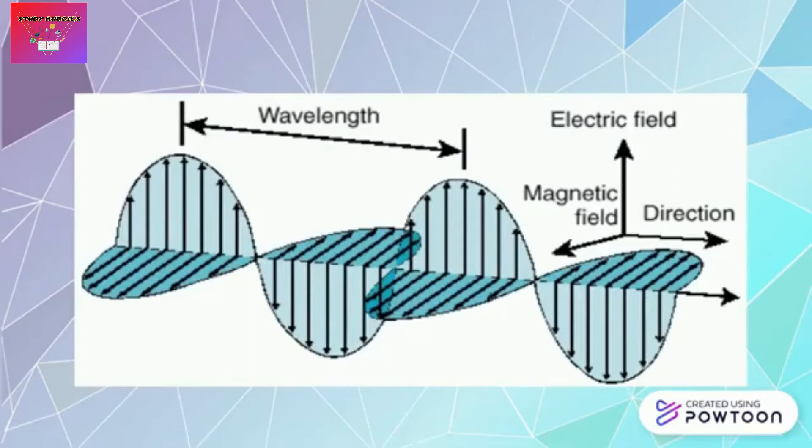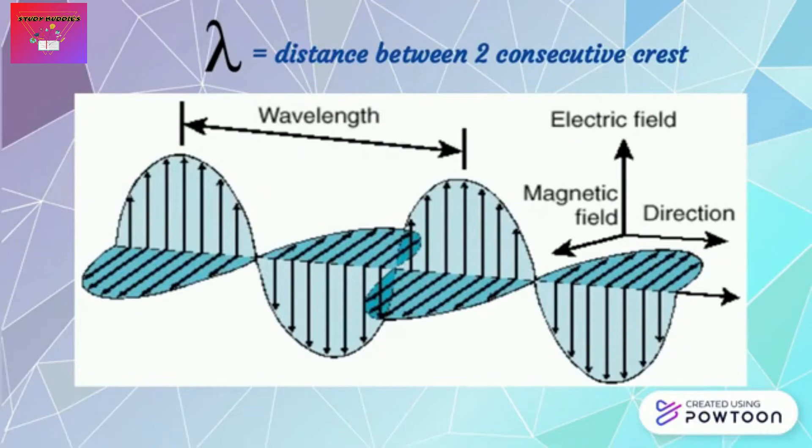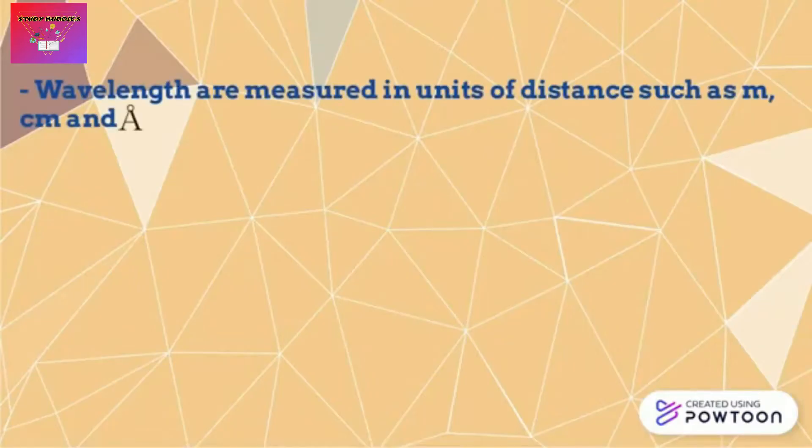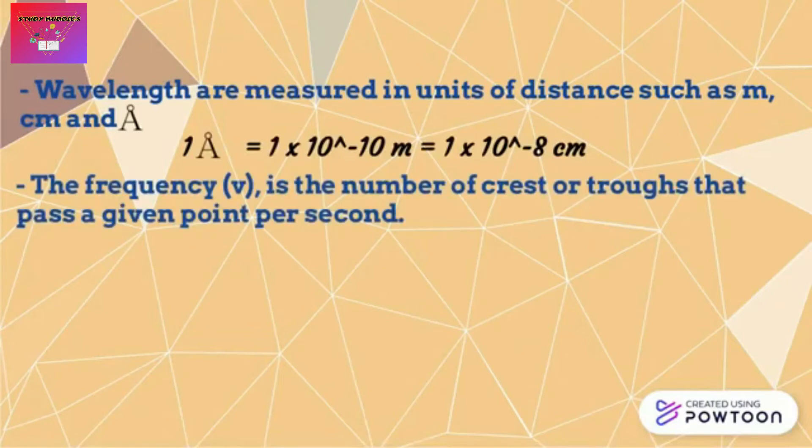This figure shows the wavelength of electromagnetic radiation. The wavelength has the symbol lambda. Wavelength is the distance from the top crest of one wave to the top of the next wave. Wavelengths are measured in units of distance such as meter, centimeter, and also Angstrom. One Angstrom equals 1 times 10 to the power of negative 10 meter and 1 times 10 to the power of negative 8 centimeter.